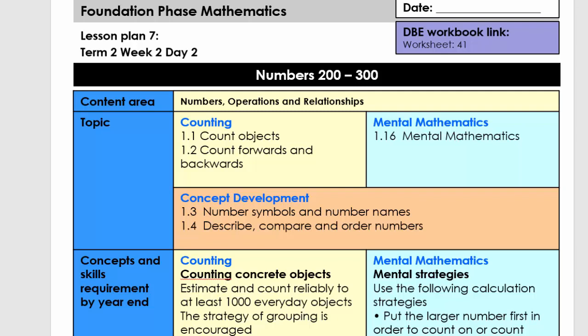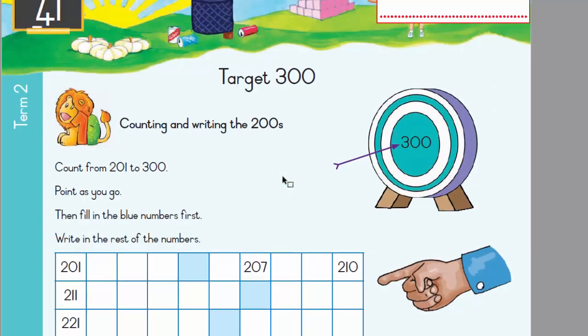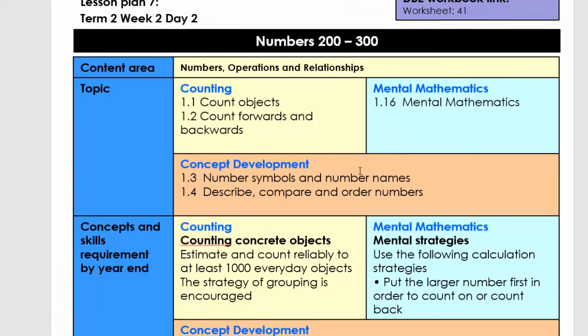Good day, today we're going to do lesson plan number 7, grade 3, term 2, and the topic is numbers 200 to 300. It also links to worksheet 41 in your DBE book. I'll quickly show you that so you can also use the worksheet in your DBE book.